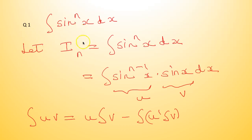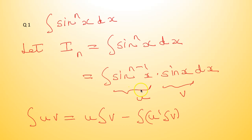Coming to the first formula, we derive integral sin raised to nx dx. Let I_n equal to integral sin raised to nx dx. We can write it as integral sin raised to (n−1)x into sin x dx — that is u into v — so we use integration by parts.